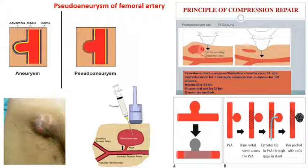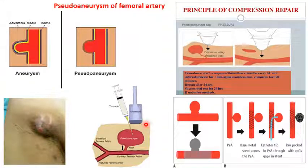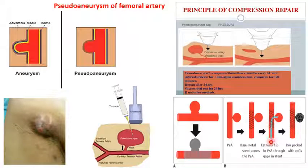Alternatively, thrombin can be injected into the pseudoaneurysm to cause clotting; this must be done very carefully under ultrasound guidance, and the feeding tract must be very narrow for this to be performed safely. Another procedure involves passing a catheter and filling the entire pseudoaneurysm with coils so that blood no longer enters it; the aneurysm then stops growing and gets absorbed. These are the main procedures followed to treat pseudoaneurysm of the femoral artery.